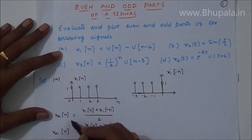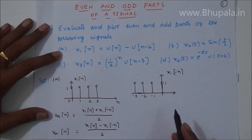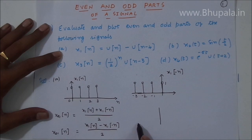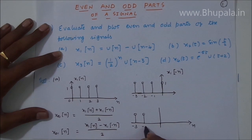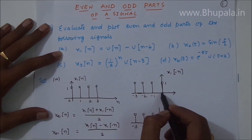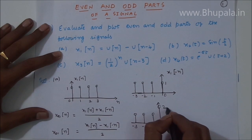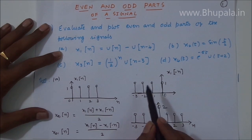To find the even part, you have to add x1[-n] to x1[n]. Looking at the even part of the signal: if you add these two, the signal starts at minus 3, then minus 2, minus 1. At zero, this value is one and the other is also one, so adding them gives two. After zero it continues at 1, 2, and 3.